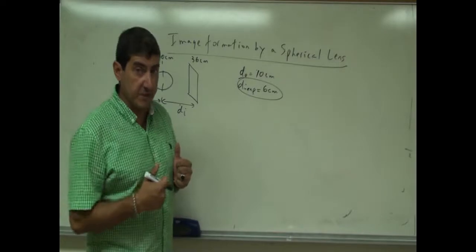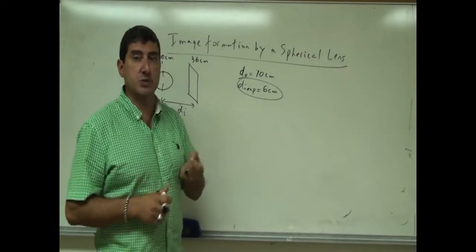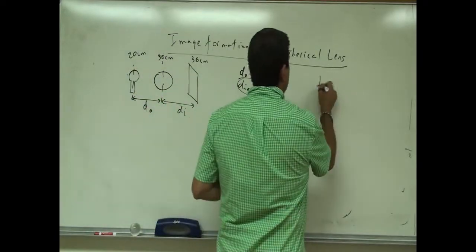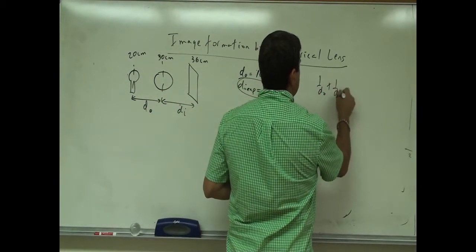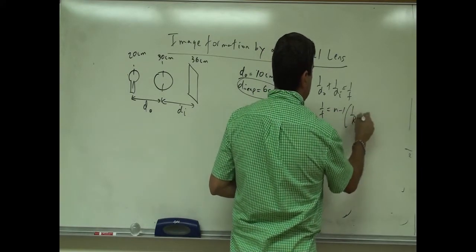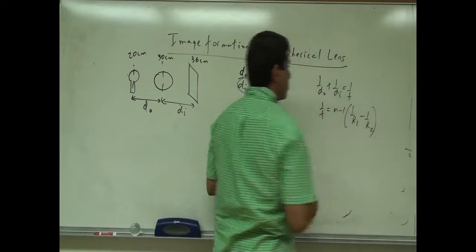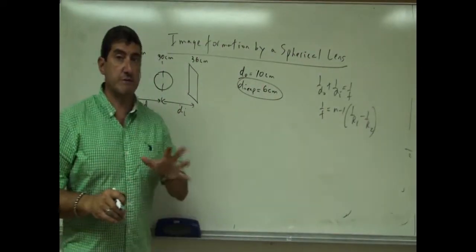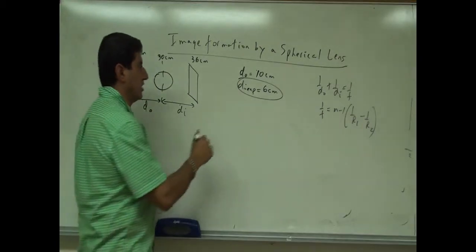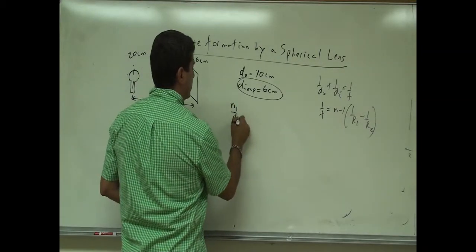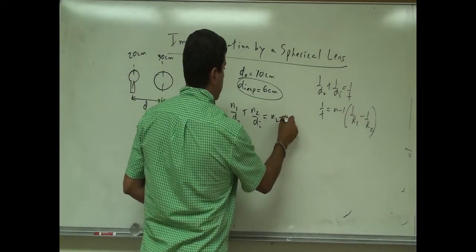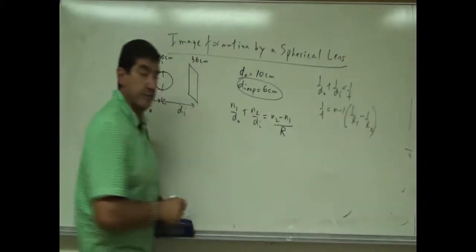For spherical lenses, this is tricky because we can't use the thin lens equation. The thin lens equation is 1/DO + 1/DI = 1/F, and 1/F = (N−1)(1/R1 − 1/R2). We can't use that for thick lenses. For spherical lenses, we have to use: N1/DO + N2/DI = (N2 − N1)/R.